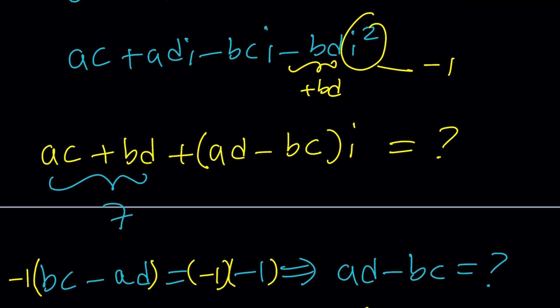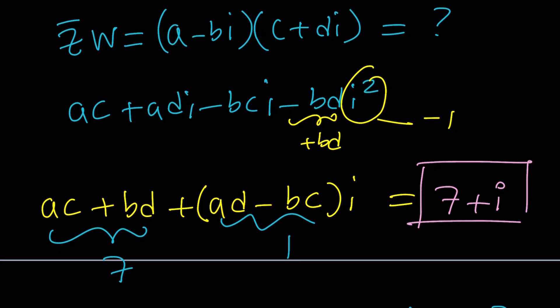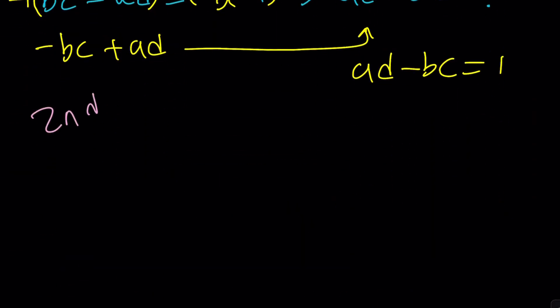Awesome. So this is 1 and this is 7. The answer is 7 plus i. Let's take a look at the second method real quick, because it is real quick.